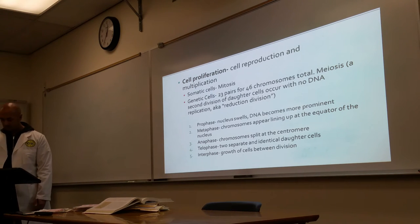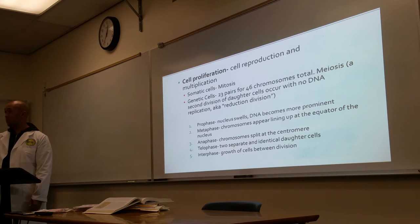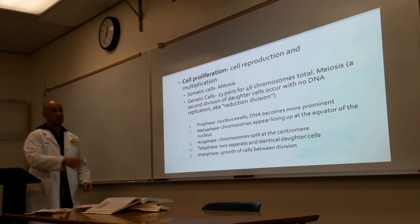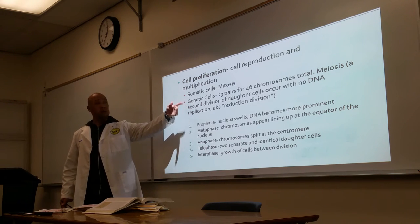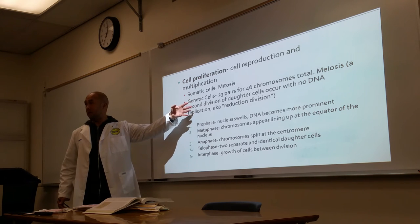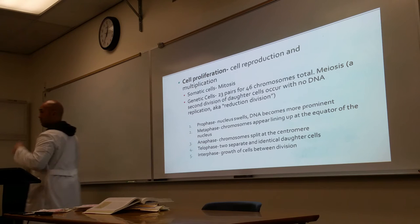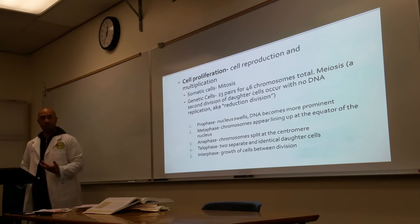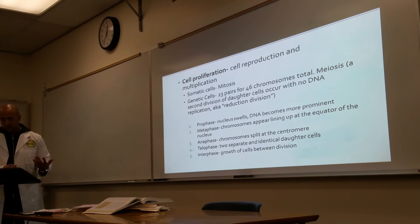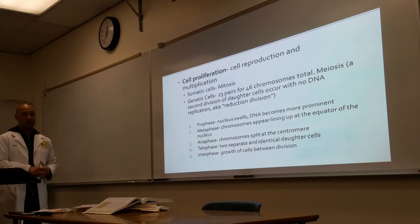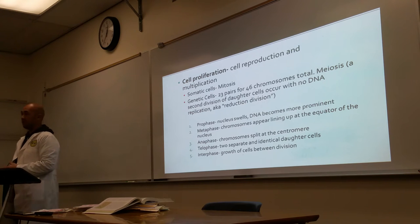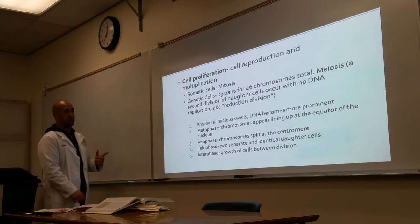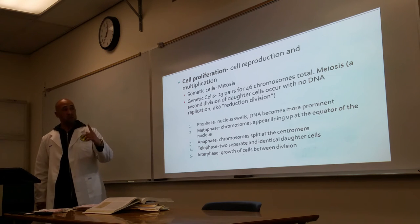Mitosis is for body cells; meiosis is for genetic cells. Each cell starts with 23 pairs. From the geneticist's point of view, there are two phases: mitosis — broken into four sub-phases — and interphase.